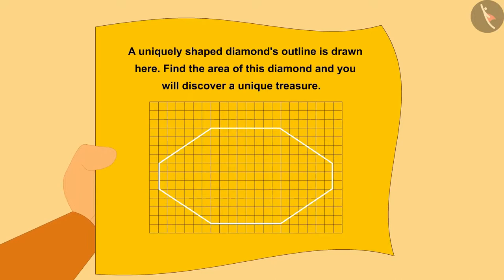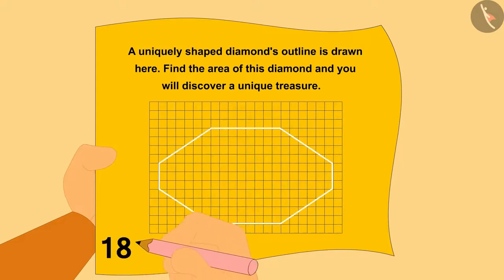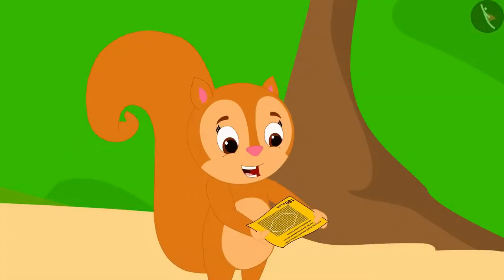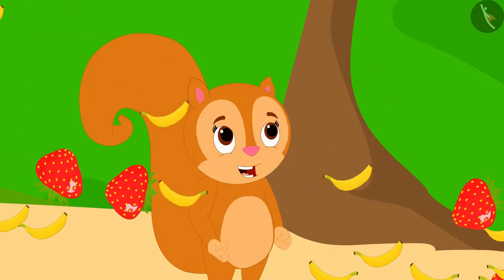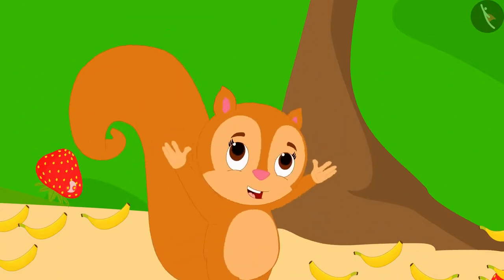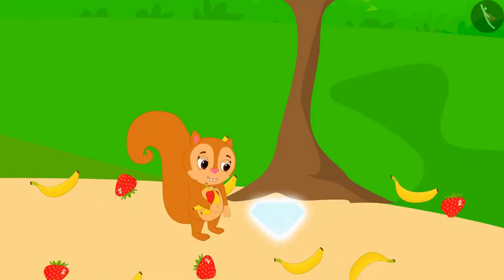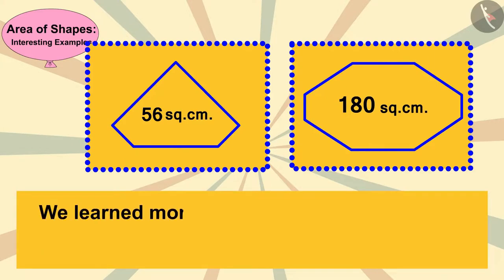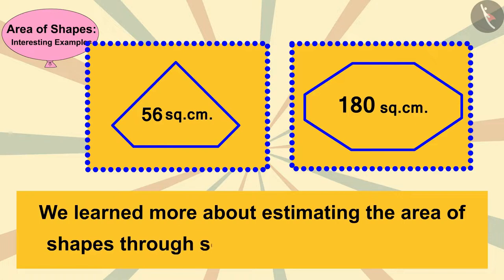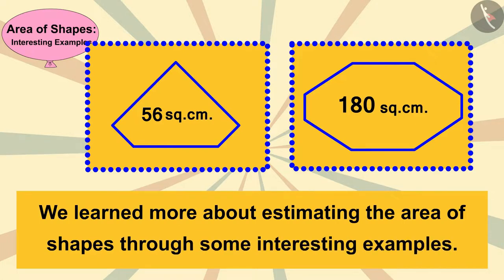Chanda too found the answer to this puzzle and wrote the area of the diamond as 180 square centimeters. This time, as soon as Chanda wrote the answer, the paper disappeared and fruits began to shower from the sky. Chanda became very happy, gathered some fruits, took her diamond, and happily walked towards her house. Children, in this video we learned more about estimating the area of shapes through interesting examples. In the next video, we will see some fun concepts related to this.